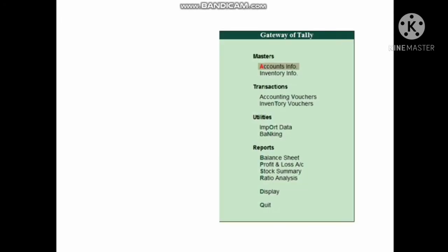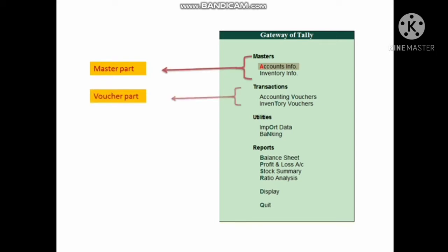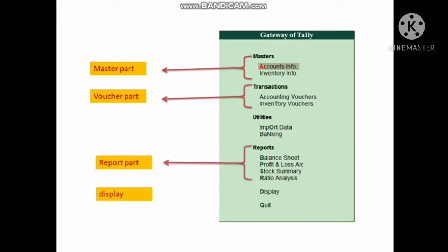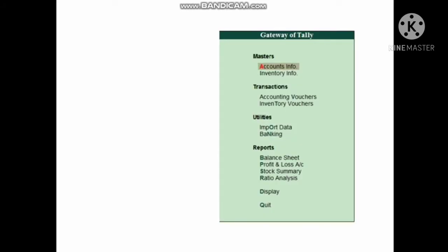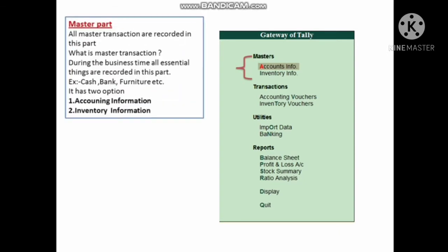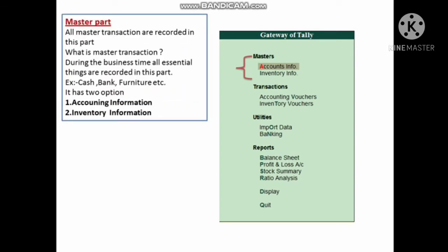The second section is Gateway of Tally. Gateway of Tally has four parts: the Master part, the Transaction part, the Report part, and the Display part.